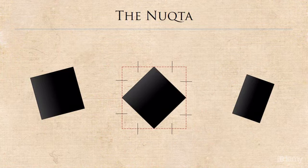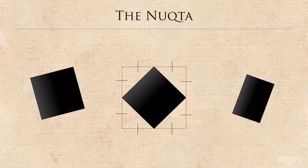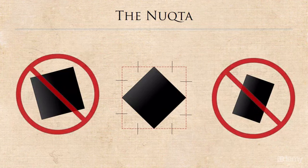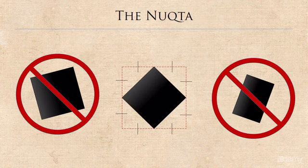One, all of the sides have to be of equal length, and that they have to be on a 45 degree rotation. So it has to be a diamond shape. So these two figures would be incorrect, and please make sure that you script the Nuqtas like this.